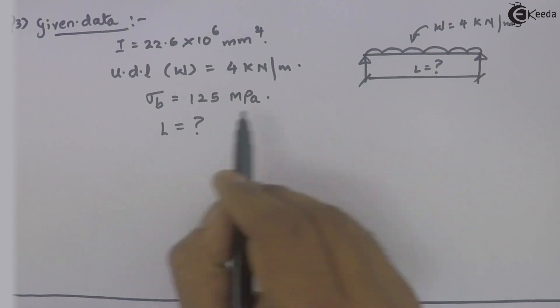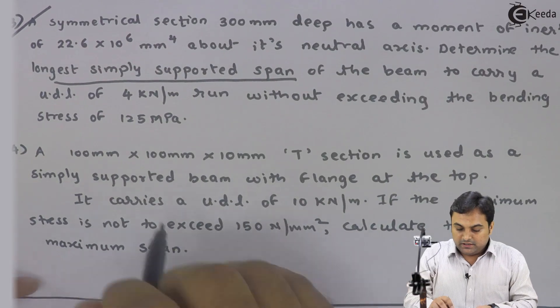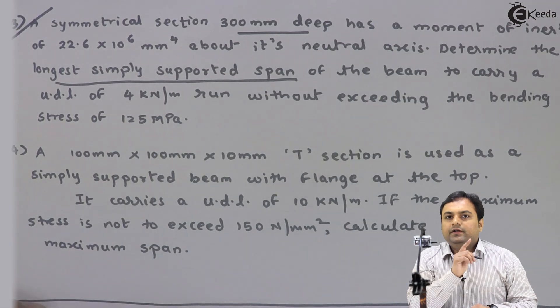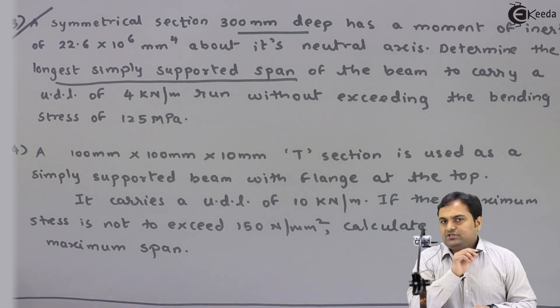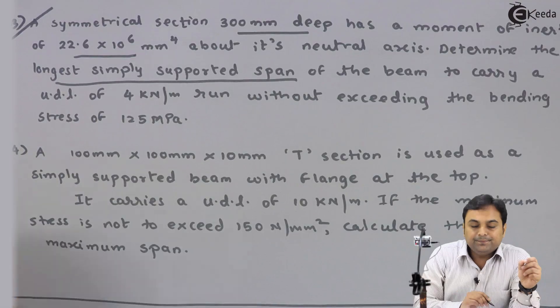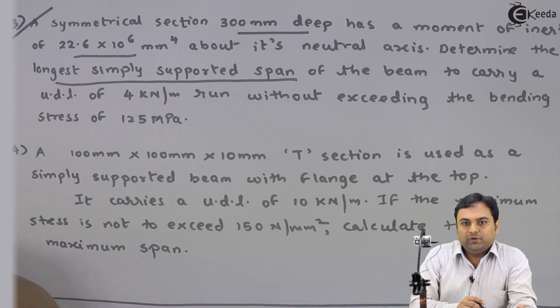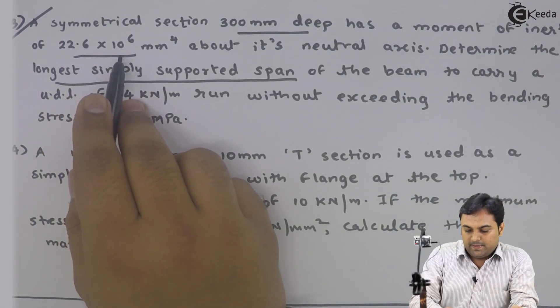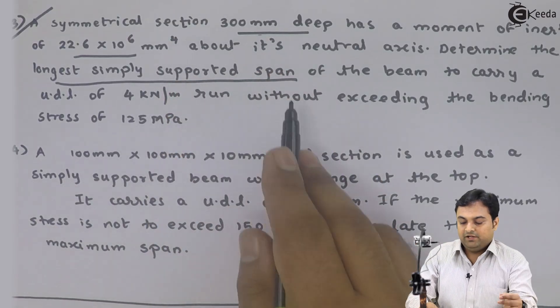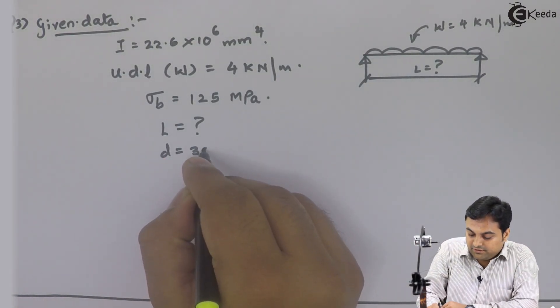So length of the beam is the question. And you are given the depth. A symmetrical section 300 mm deep - you are only given depth. There's nothing about width, cross section is not given. That's why they have directly provided the moment of inertia. Since they have not given you the width, they have directly provided the moment of inertia. This depth will be useful to calculate the value of y. So d = 300 mm.